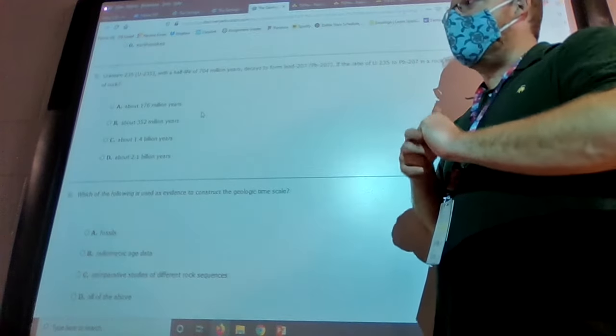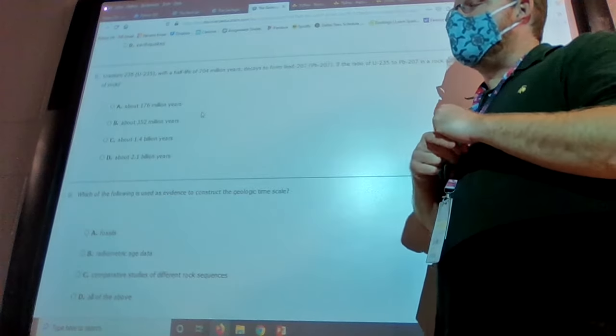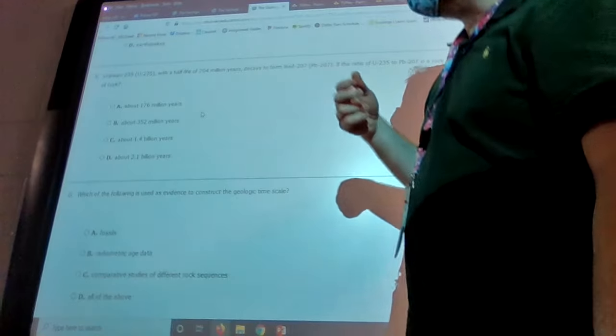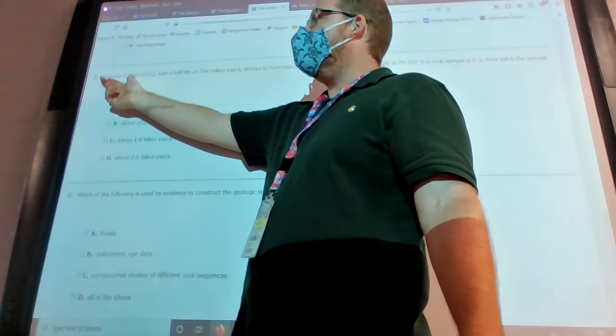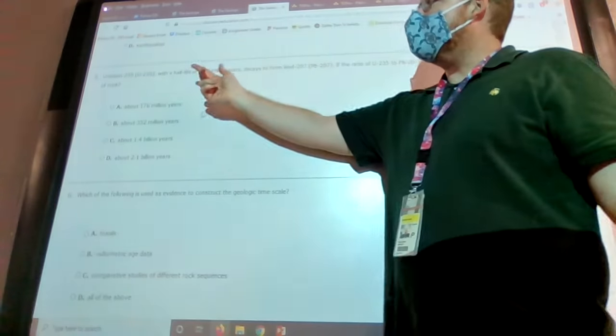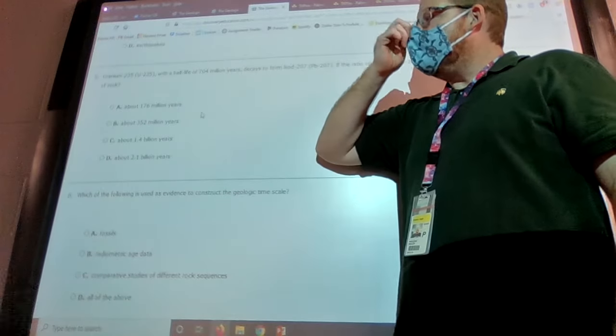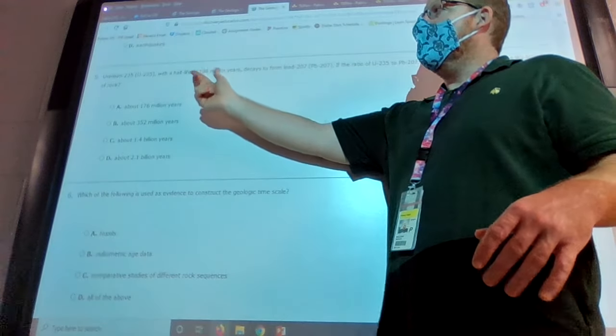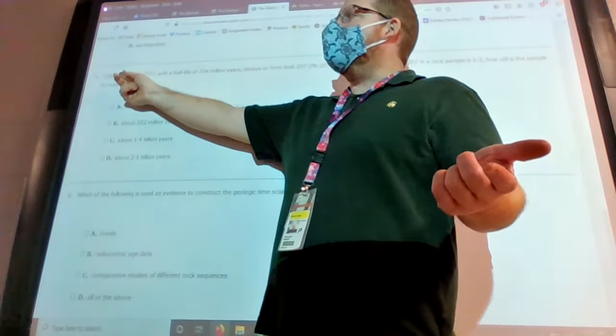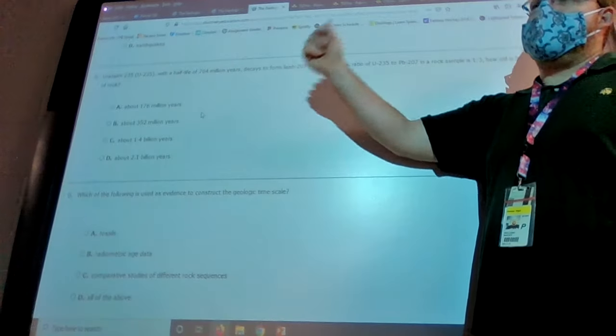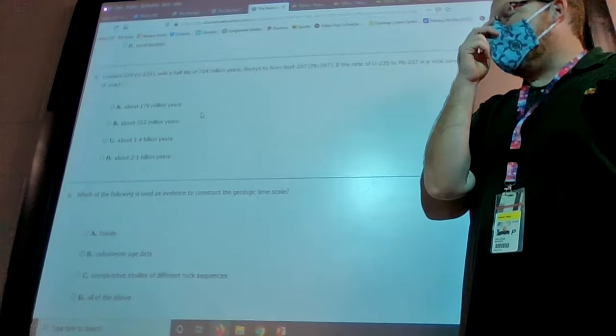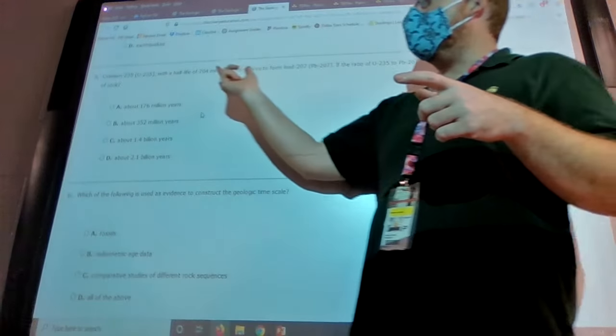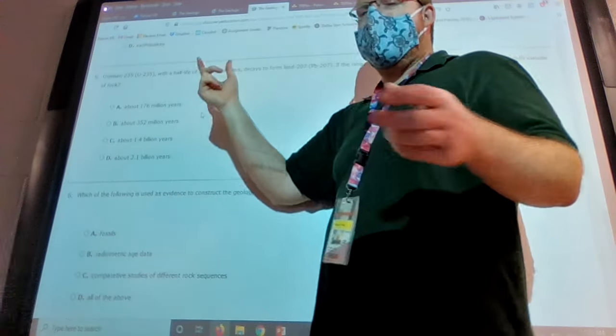It talks about half-life and radioactive decay. And so I just want to show you the problem and show you the notes that I put on the board. The problem says that uranium-235, which is a type of uranium, has a half-life of 704 million years, which basically means it takes 704 million years for half of that uranium to turn into lead. So to become less radioactive and to turn into a completely different element. Half of it will turn into that element lead in 704 million years.